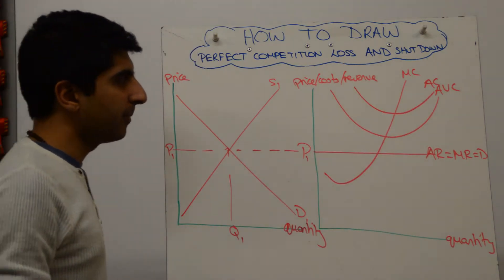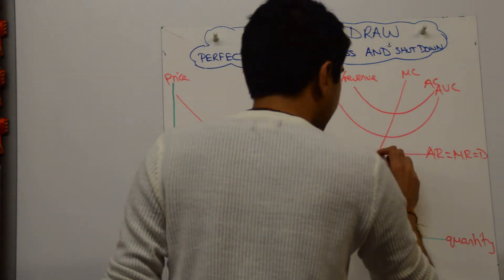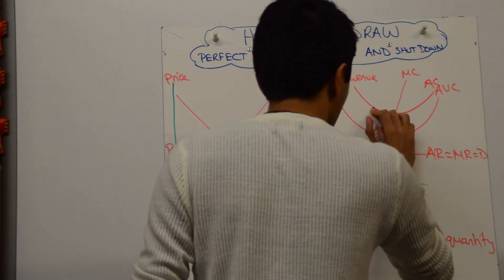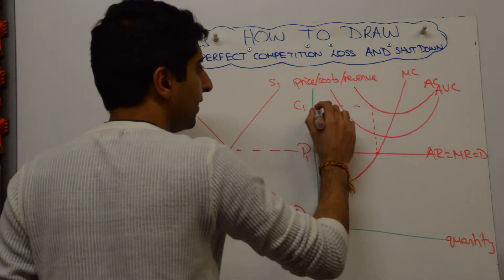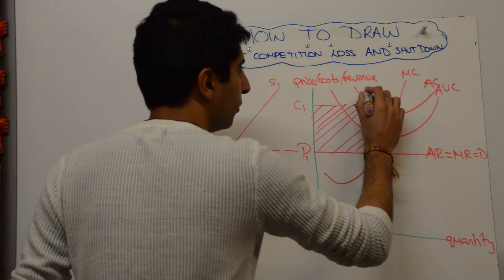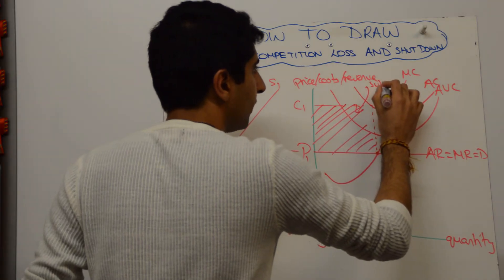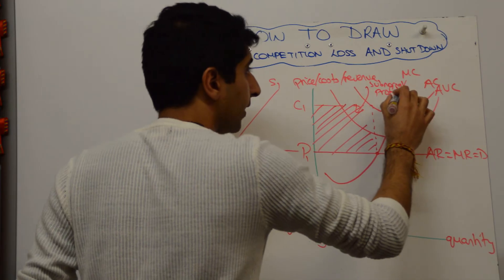Then you do your profit maximization point, so MC equals MR there. You go upwards to the AC to work out the cost, call it C1. If you want, you can shade in the area, and that is your subnormal profit. You can label that as subnormal profit. So there is the loss that we're talking about.